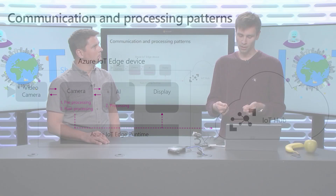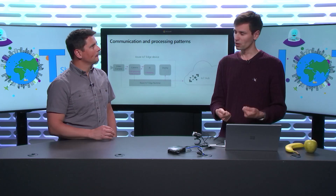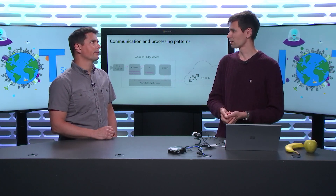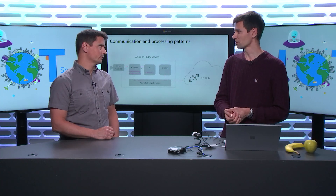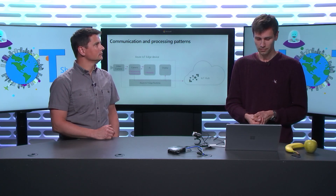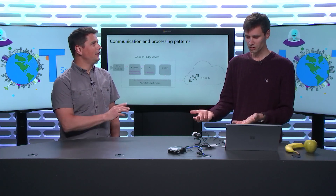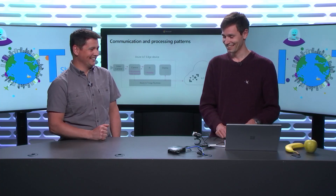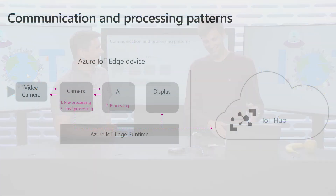The recommendation is to try to do the pre-processing and post-processing outside of your main AI module, because the main AI module typically comes as built-in or is built by someone else like a data scientist on your team, and you don't want to mess with that. Also, the earlier in the pipeline you downsize your media files, the better, because it means all your communications are faster.